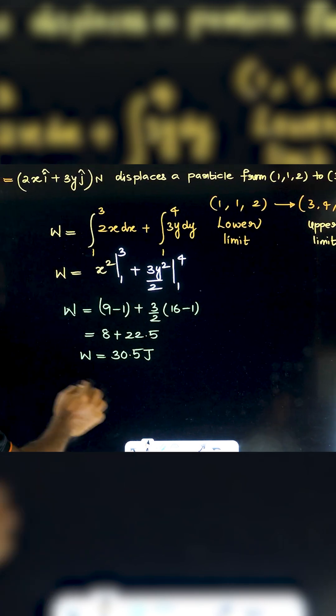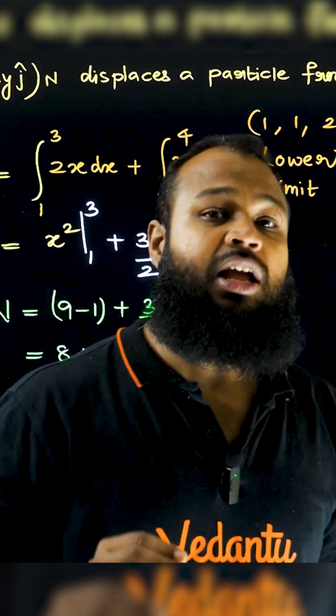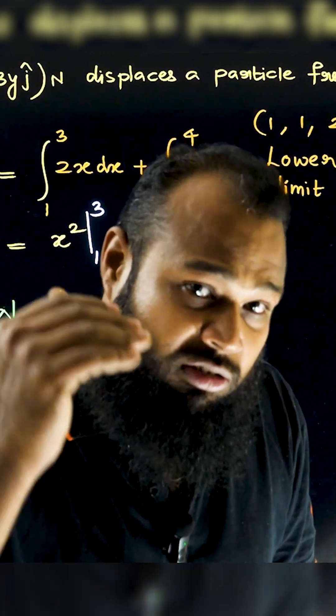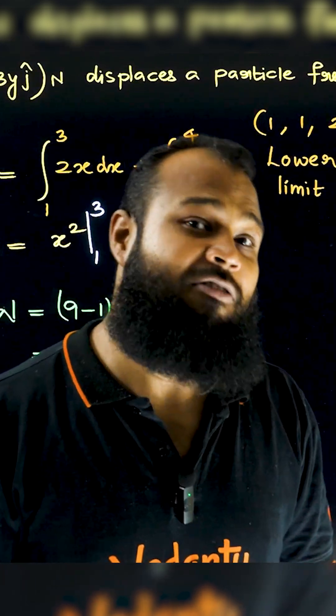Work done is equal to 30.5 joules. Work is a scalar quantity, and it can be positive, zero, or negative. This is how you calculate the work done by variable force.